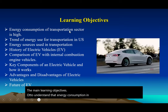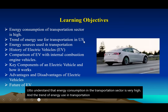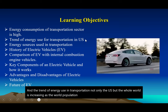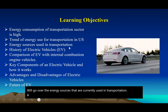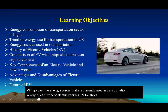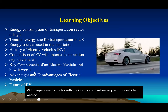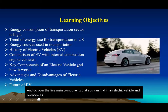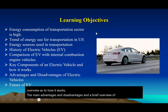The trend of energy use in transportation, not only in the US but the whole world, is increasing as the world population increases. We'll go over the energy sources currently used in transportation, a brief history of electric vehicles (EV for short), compare an electric motor with an internal combustion engine vehicle, go over the five main components of an electric vehicle, its main advantages and disadvantages, and a brief overview of the future for electric vehicles.